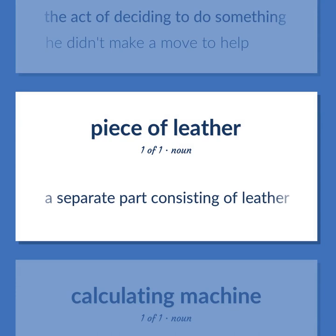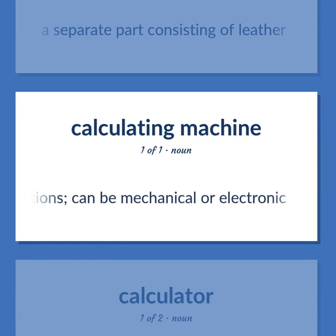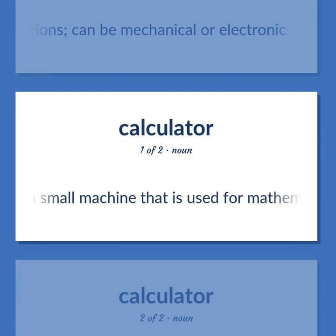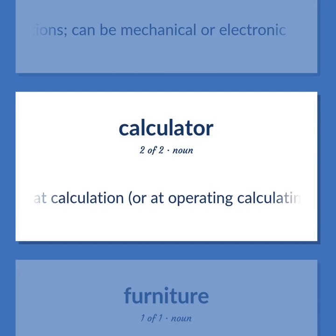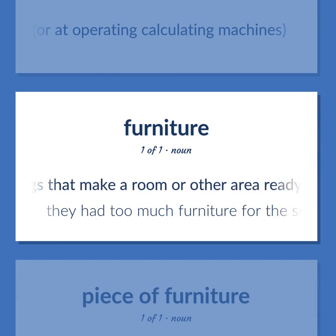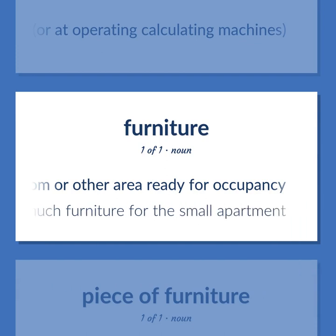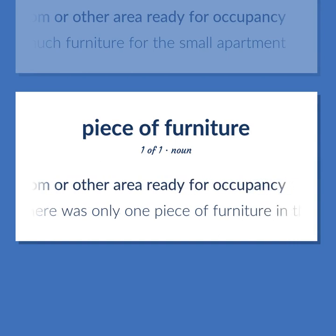A separate part consisting of leather. Calculator: a small machine that is used for mathematical calculations; can be mechanical or electronic. An expert at calculation or at operating calculating machines. Furniture: furnishings that make a room or other area ready for occupancy — they had too much furniture for the small apartment; there was only one piece of furniture in the room.